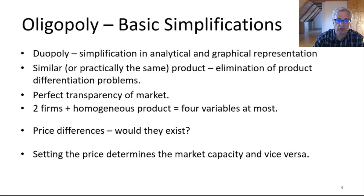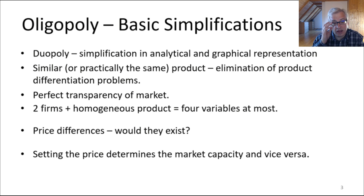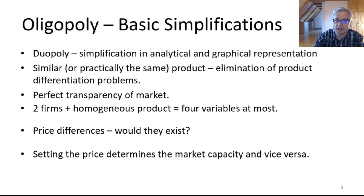Our oligopolistic considerations will be simplified as much as possible without losing the major idea of what oligopoly is about. We will reduce the number of players to just two — the smallest number where we can still say this is an oligopolistic market, since one player would be a monopoly. We are going to consider oligopoly in the special case of duopoly — two players — which allows us to simplify the analytical side and graphical representation, since with three, four, or five players graphing becomes substantially more difficult.